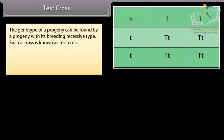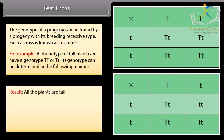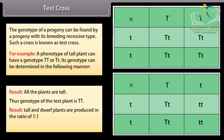Test cross. The genotype of a progeny can be found by crossing it with a homozygous recessive type — such a cross is known as a test cross. For example, a tall plant can have a genotype TT or Tt. In the first case, all plants are tall, so the genotype is TT. In the second case, tall and dwarf plants are produced in a 1:1 ratio, so the genotype is Tt.